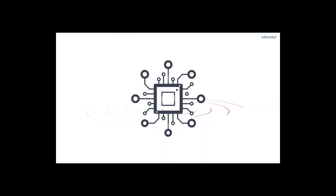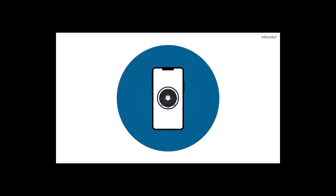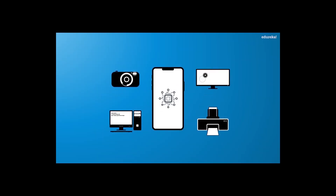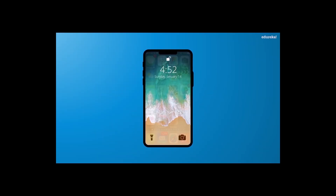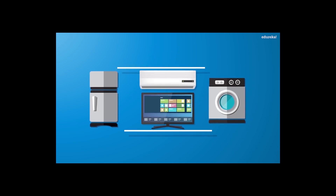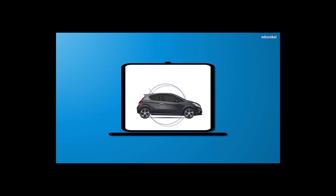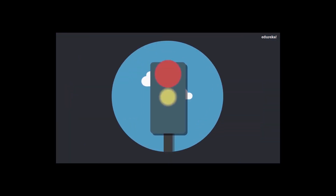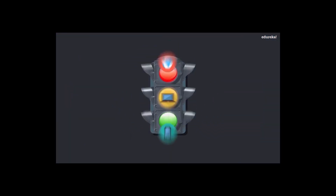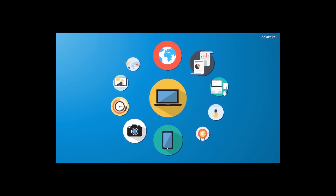It's all done using sensors. Sensors are embedded in every physical device. It can be your mobile phone, electrical appliances, vehicles, barcode sensors, traffic lights, and almost everything that you come across in day-to-day life.